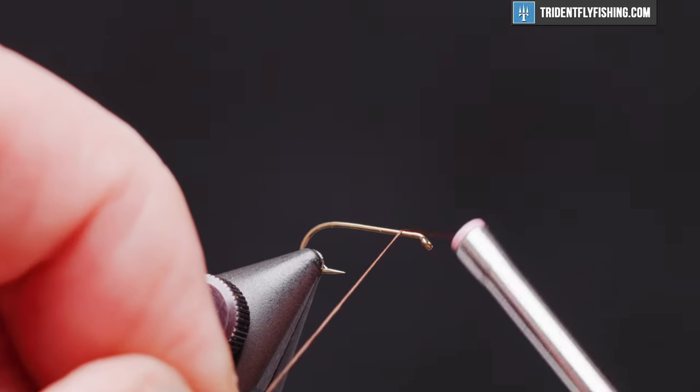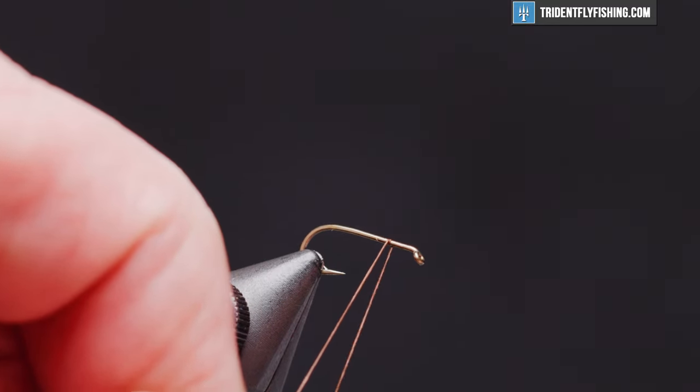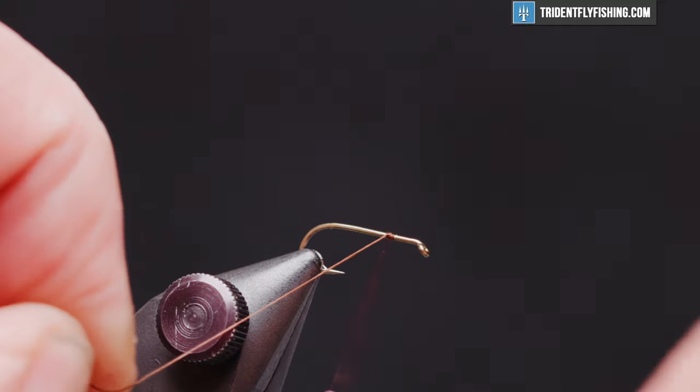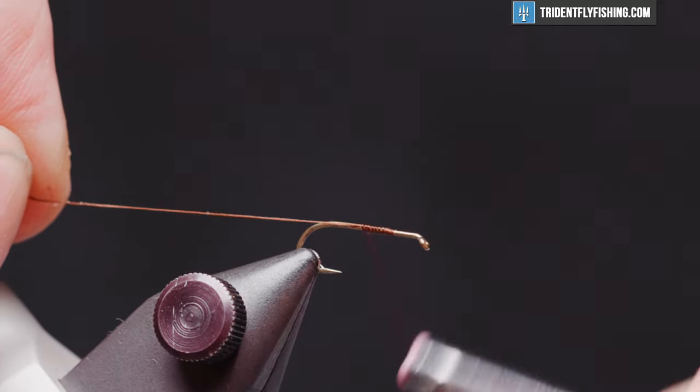We'll get the tie started here with our thread about an eye length and a half behind the hook eye. We'll run back to the start of the bend of the hook.